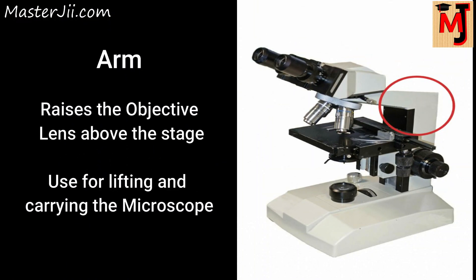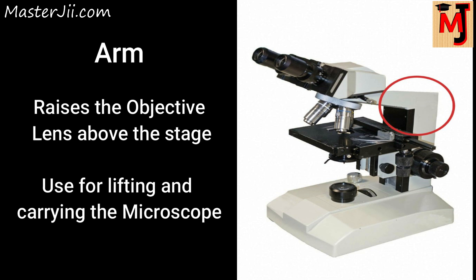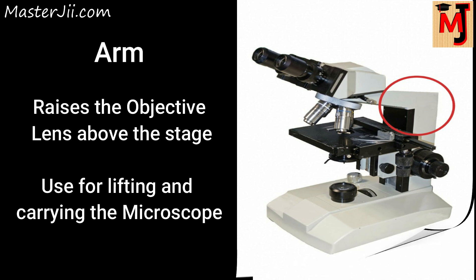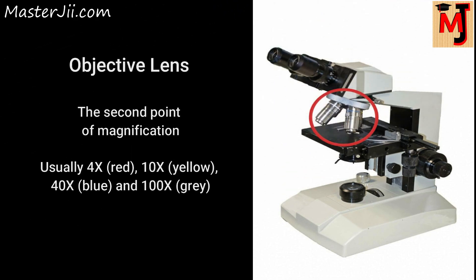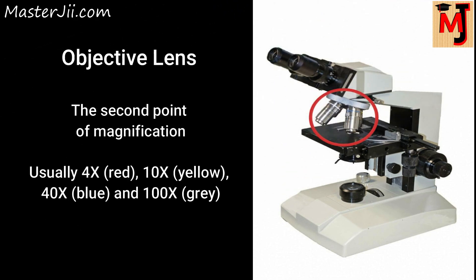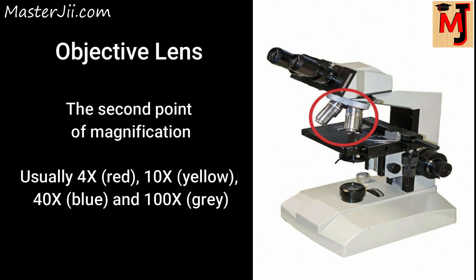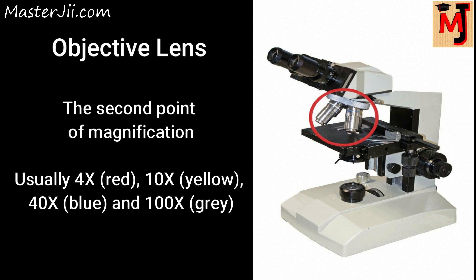The arm is like the backbone of the microscope, as it raises the objective lens above the stage. The arm is also used for lifting and carrying the microscope from one place to another.